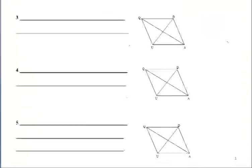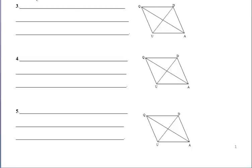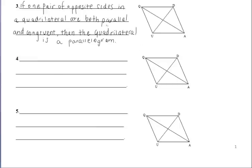The third way states that if one pair of opposite sides of a quadrilateral are both parallel and congruent, then the quadrilateral is a parallelogram. If we have a quadrilateral and one pair of opposite sides that are both parallel and congruent, that's enough to say it's a parallelogram — it works for either pair of opposite sides.